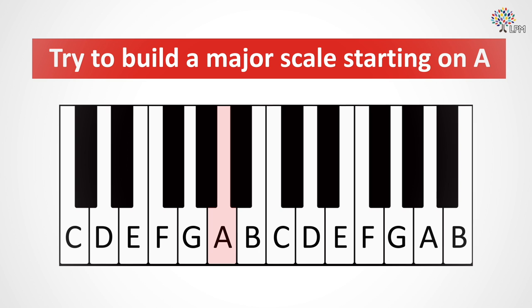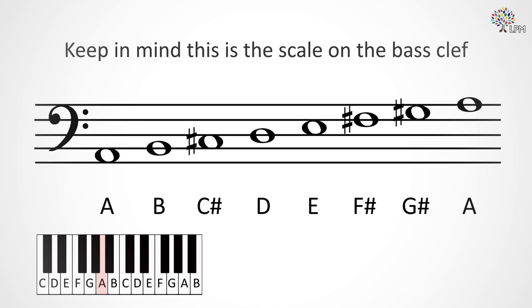Hopefully you ended up with something like this. In order to keep the same pattern of tones and semitones, we need to use some black keys, here written as sharps so that we are using every letter name once. How many black keys do we have? Yes, they are C sharp, F sharp, and G sharp.